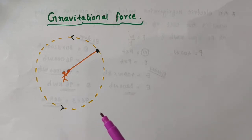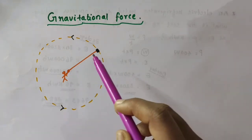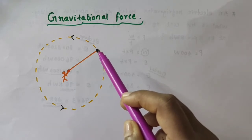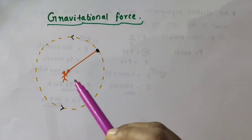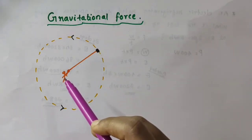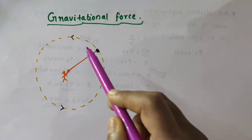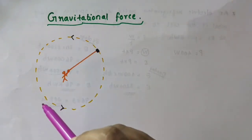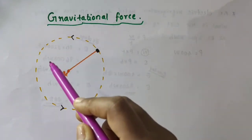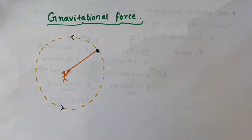For this activity, we just want to take a thread, then tie a small stone at one end, then hold the other end of the thread and whirl it round. The stone will describe a circular path — that is, the stone will move in a circular path with a certain speed.